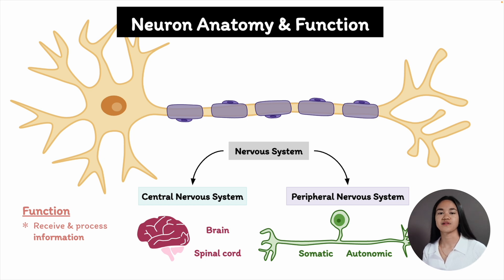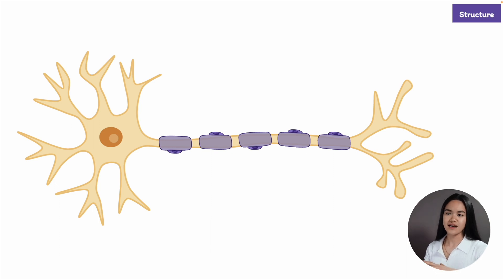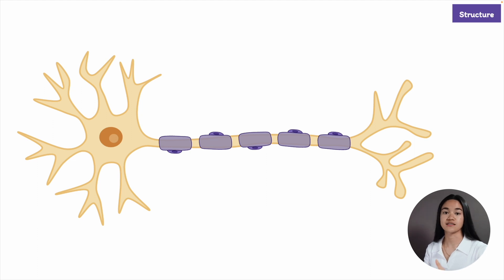So now we'll subtract complexity and break down the structure of a neuron. Although neurons in various regions of the nervous system vary greatly in size and shape, they all have a few things in common that allow cell-to-cell communication. Most neurons have a cell body, dendrites, and an axon.